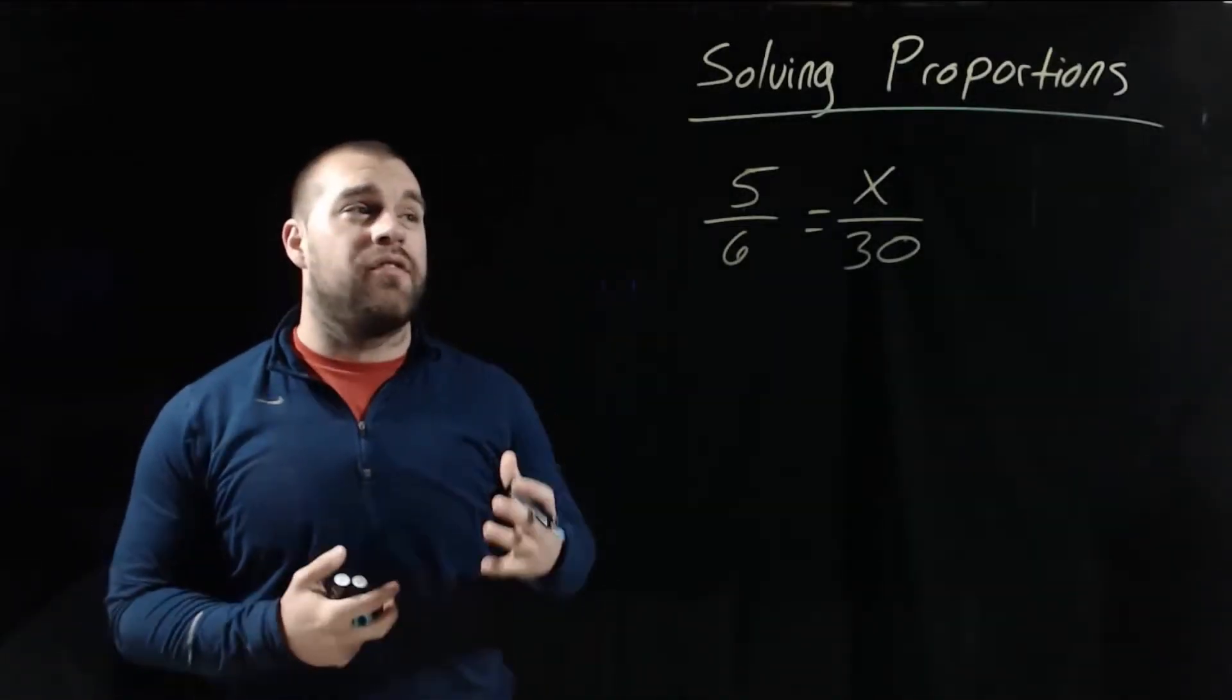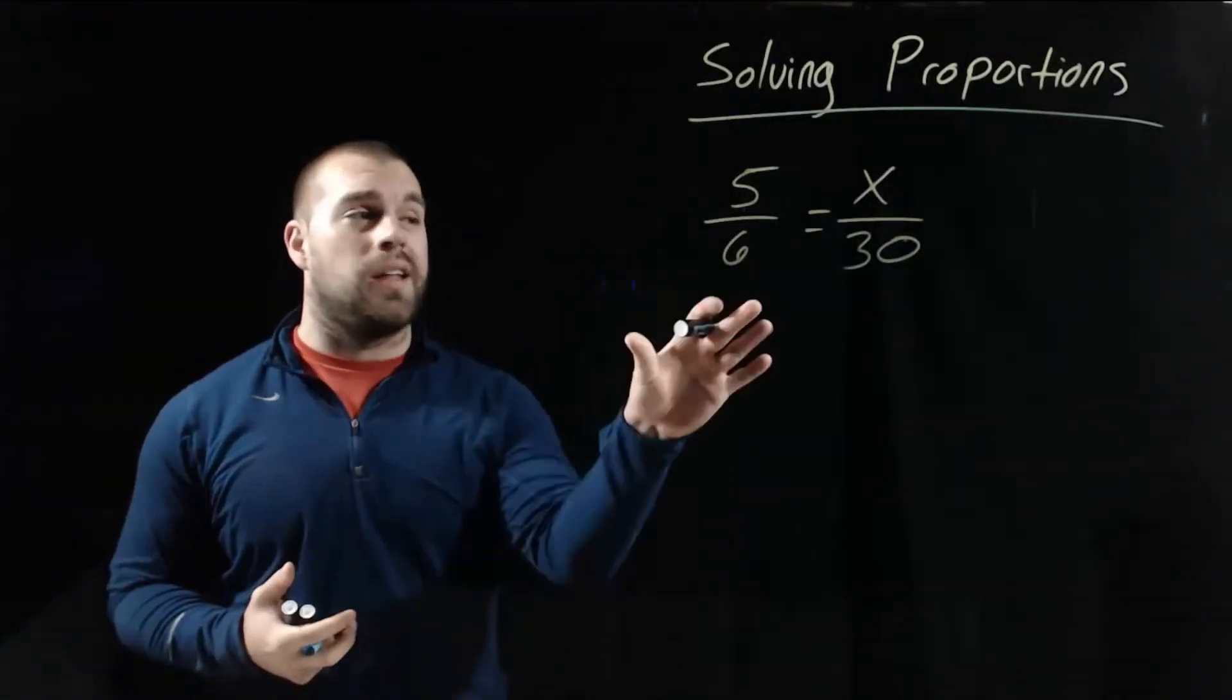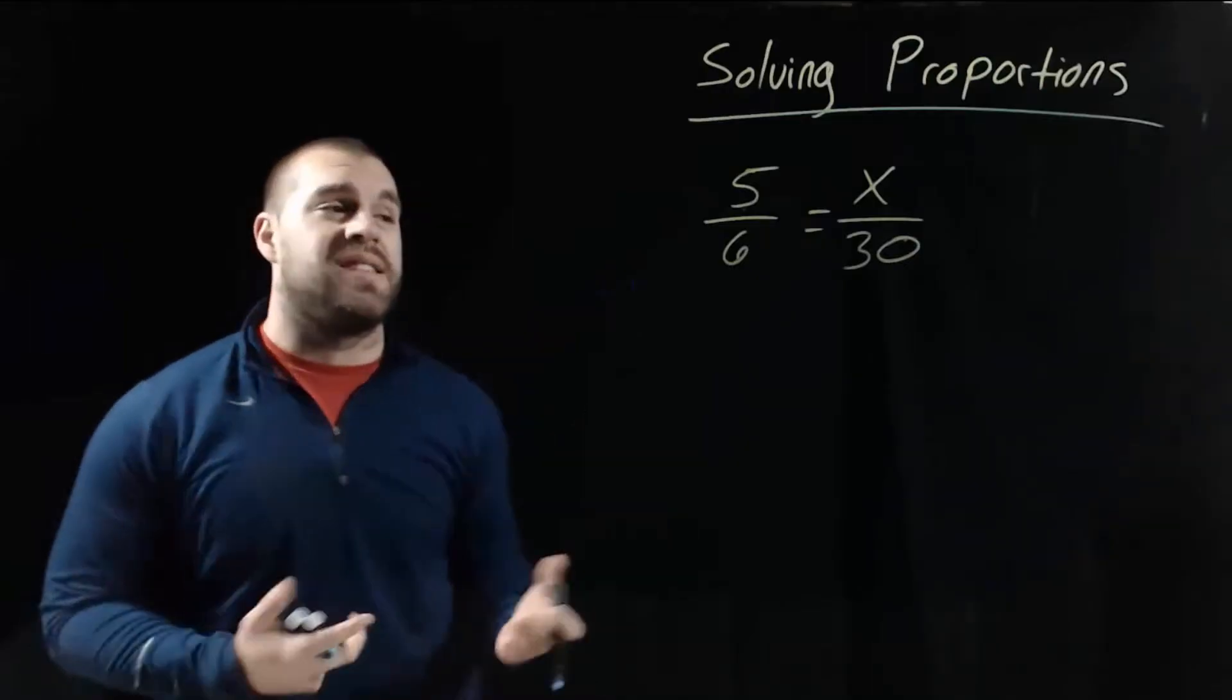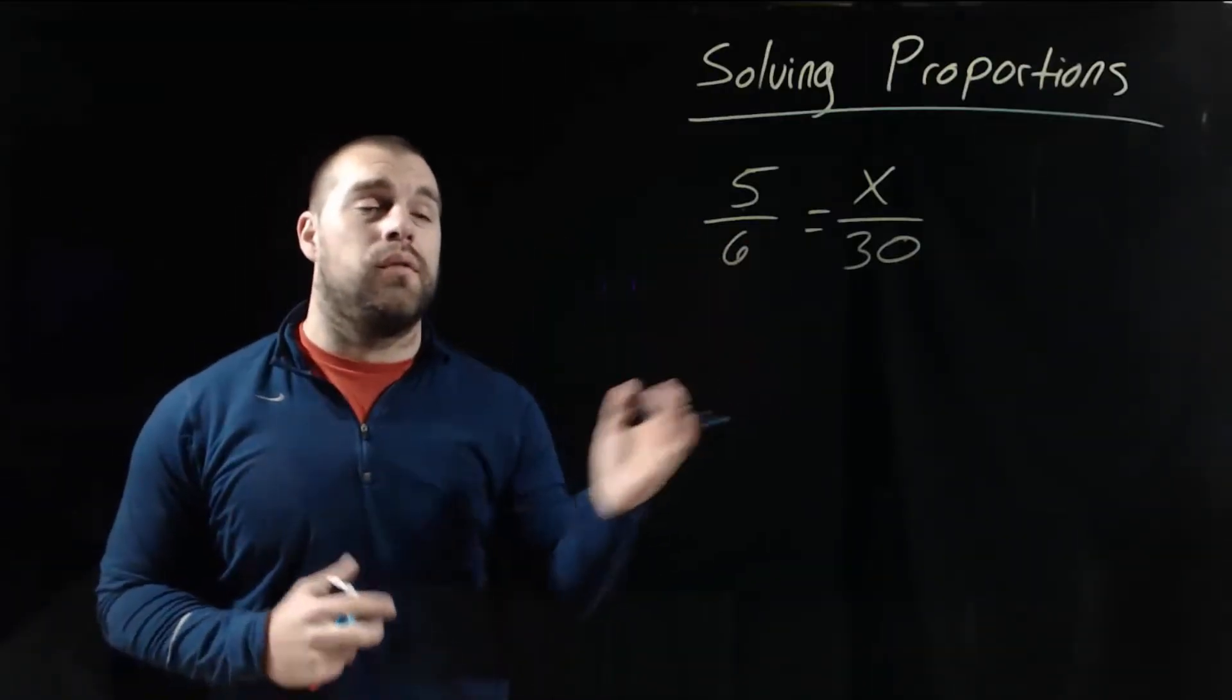Now, we're not always going to have all of the information that we need in a proportion. Like in this one, we've got a missing value, an x. So we've got 5 over 6 is equal to x over 30.